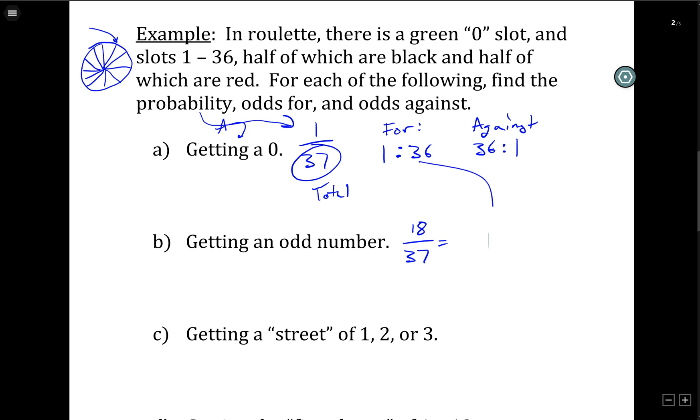Okay, so the odds for, let's continue that column down here, 18 to 19. Because there are 18 ways you can win. There are 19 ways you can lose. The odds against, 19 to 18. Just flip it around.